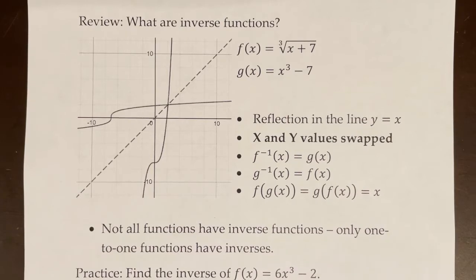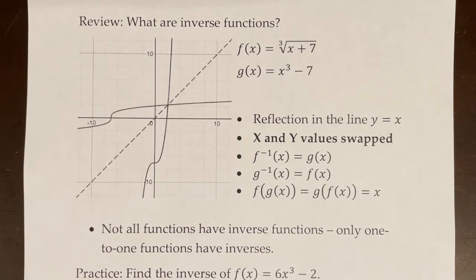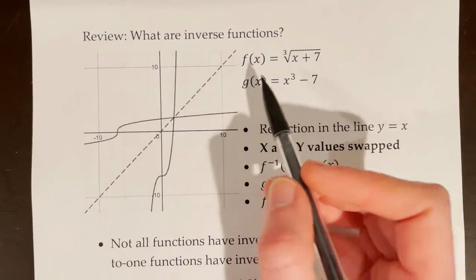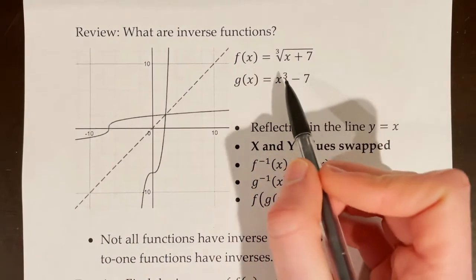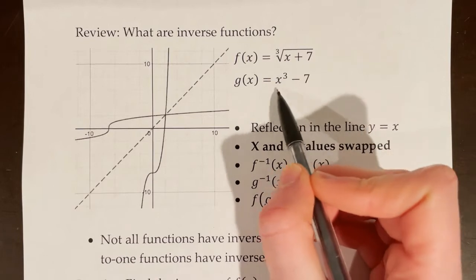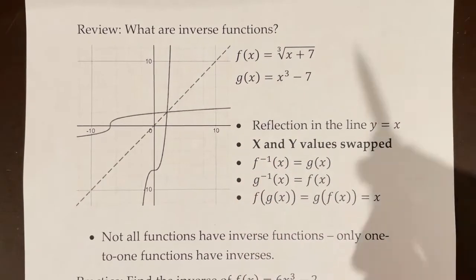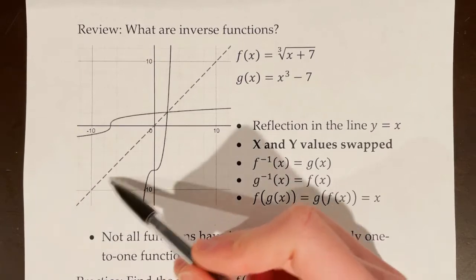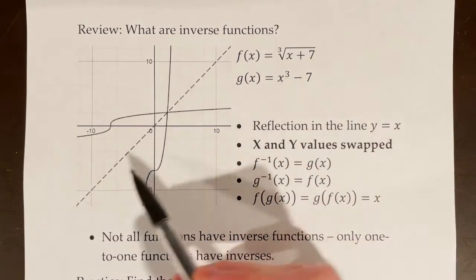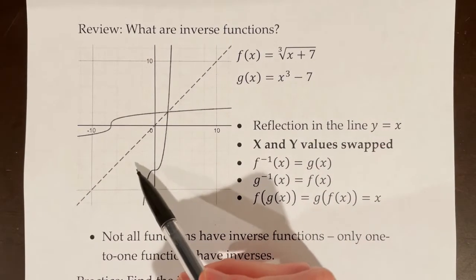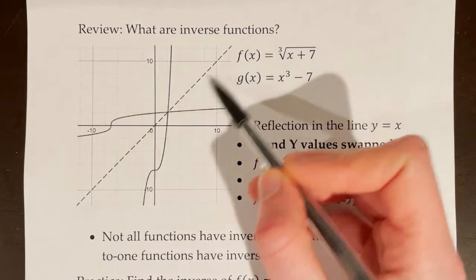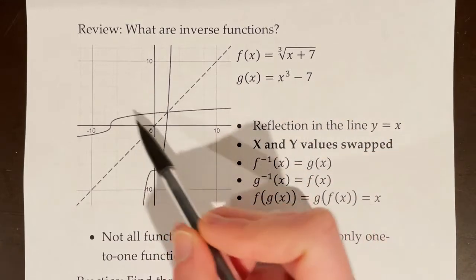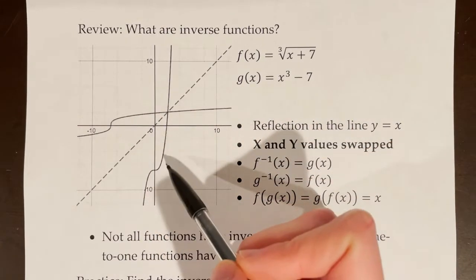In this video, we will cover finding the derivatives of inverse functions. First, let's review what inverse functions are. If we have the functions f of x equals the cube root of x plus 7 and g of x equals x cubed minus 7, these functions are considered inverses because they are reflections of each other in the line y equals x. We have f of x and g of x on the graph here, and they are mapped over the line y equals x to form each other.